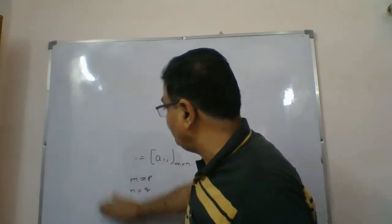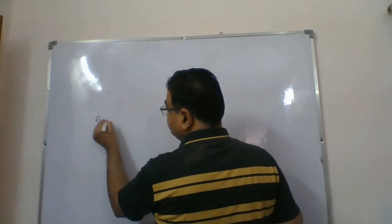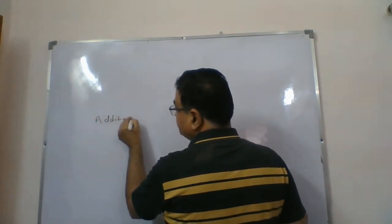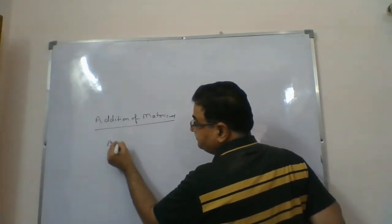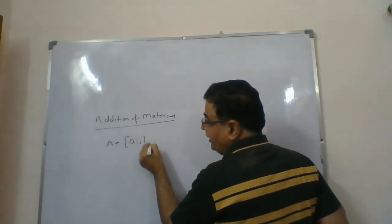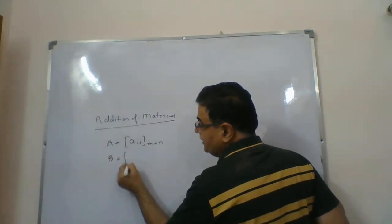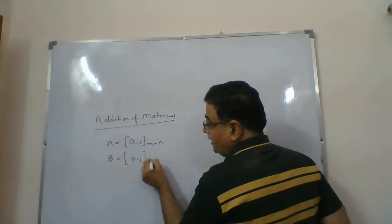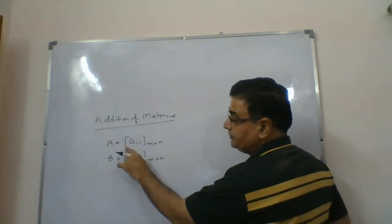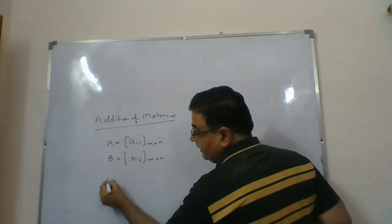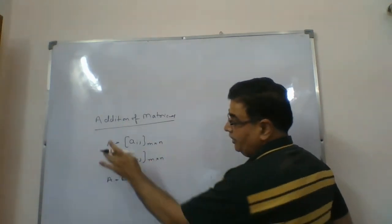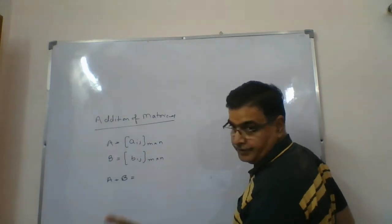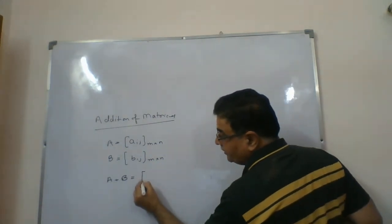Next topic is addition of matrices. If we take two matrices — A_ij of order m into n and another matrix B_ij of order m into n — that means two matrices with the same order — then we can add these two matrices. If the two matrices have different orders, you cannot add them. Addition is only possible when both matrices are of the same order, and we add corresponding elements.